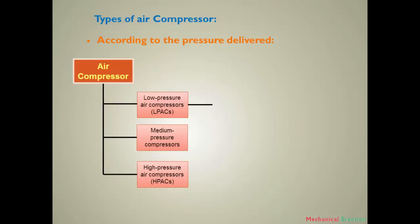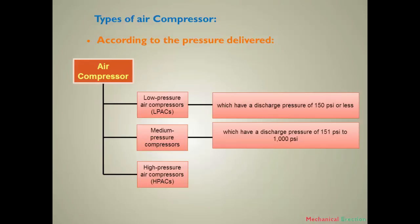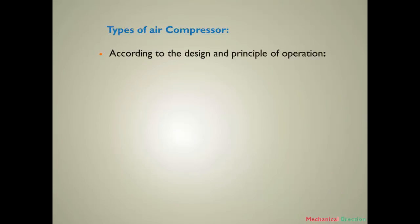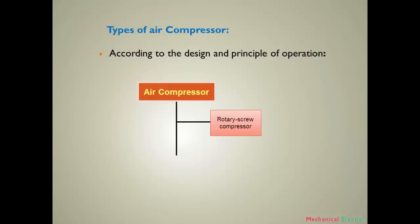A low pressure air compressor may discharge pressure up to 150 PSI. A medium pressure compressor can deliver 150 to 1000 PSI. A high pressure compressor always discharges pressure above 1000 PSI. If we classify air compressors according to design principle and operation, then air compressors can be divided into two types: rotary screw compressor and turbo compressor.